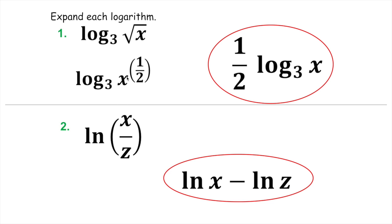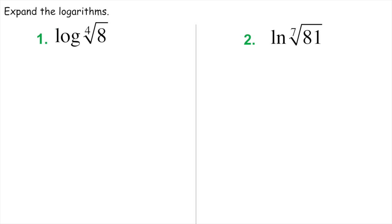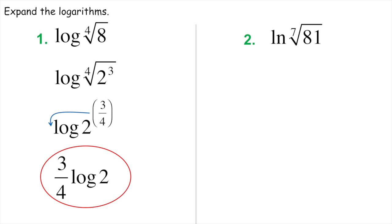Hopefully you can identify that this one is x to the one-half power — move that one-half way out in front, and we're done. These two are a little bit more of a challenge. We could say the fourth root of eight to the fourth is eight to the one-fourth power, but eight is the same thing as two cubed, so this would be two to the three-fourths power — then we can move that out in front. For the second one, figure out what 81 is as something to the something power — three to the fourth power is 81.